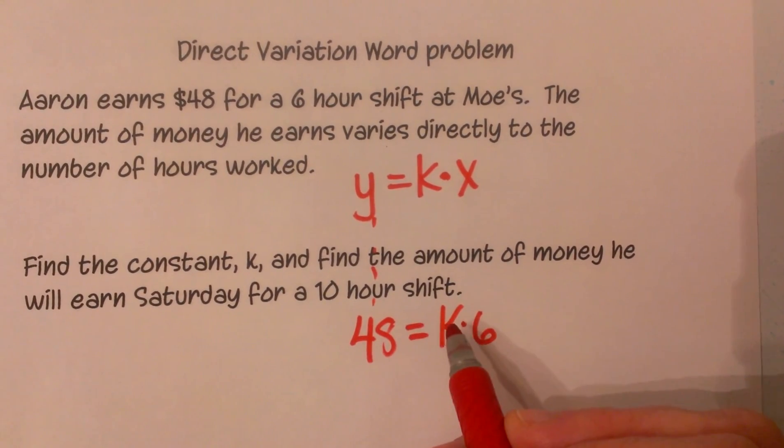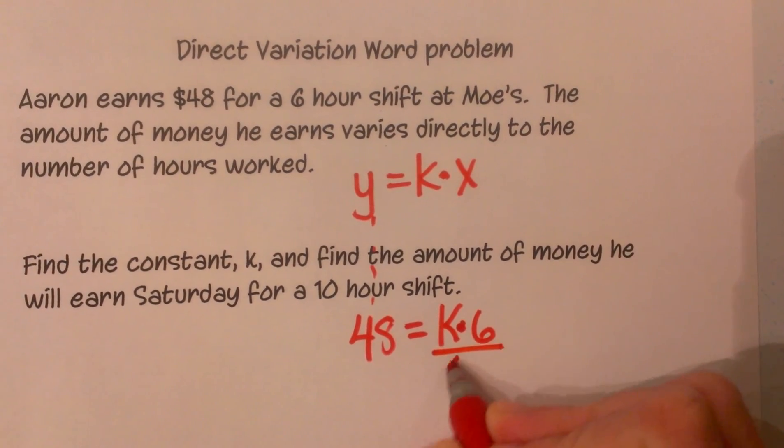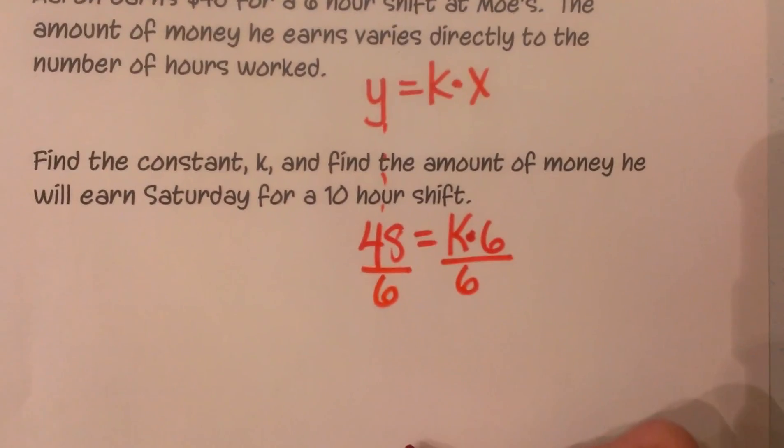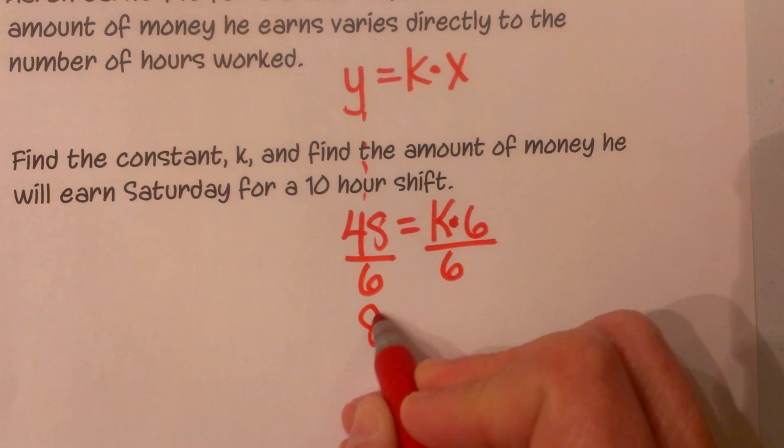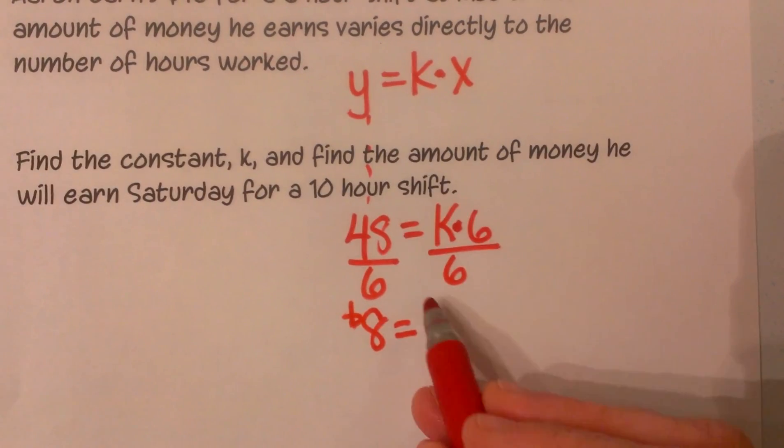So I have 48 equals 6 times k, or k times 6. So to solve for that I divide both sides by 6. So now I am going to get 8 is equal to k, and remember this is in terms of money.